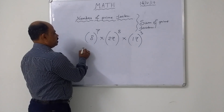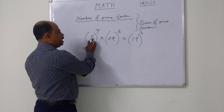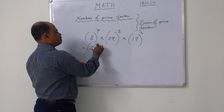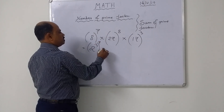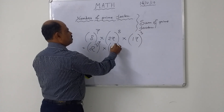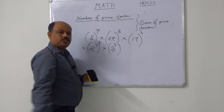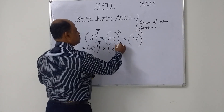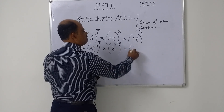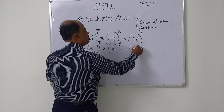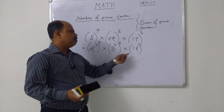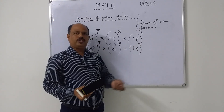So we write 8 as 2 to the power 3, raised to the power 7. From 27 we write 3 to the power 3, raised to the power 8. And 17 is still a prime number, so it is unchanged — 17 to the power 3.